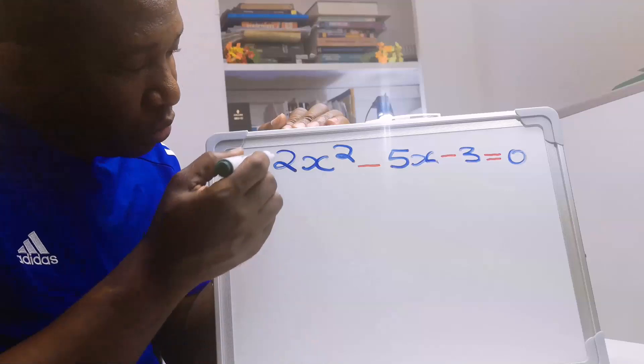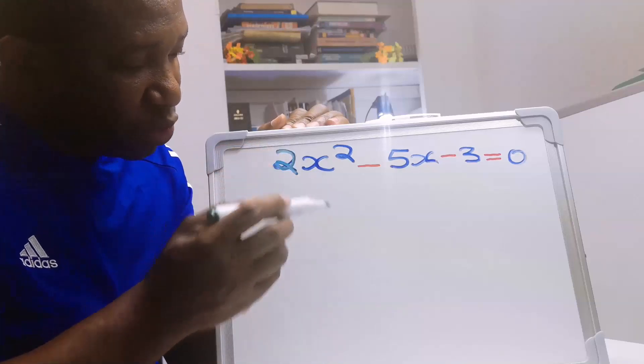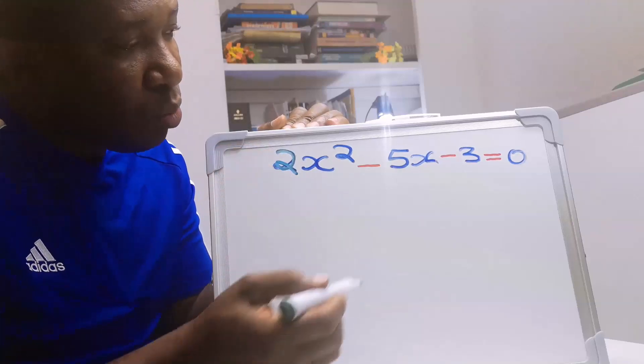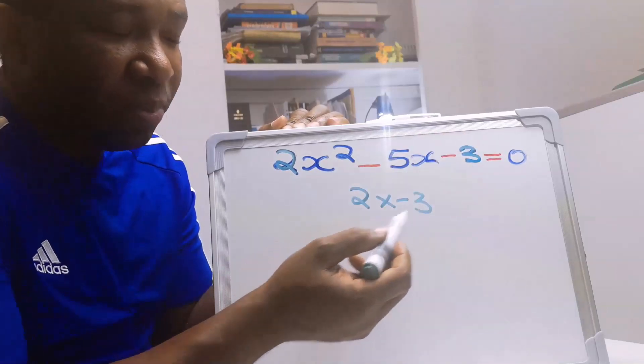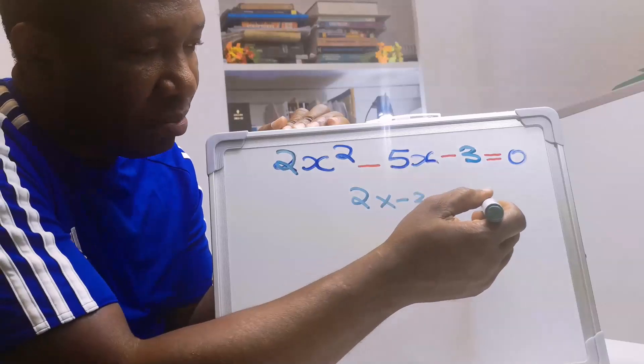To achieve this, we are going to use the coefficient of x squared which is 2 to multiply the constant which is minus 3. 2 multiplied minus 3 is minus 6.